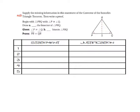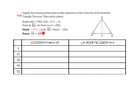The proof of the converse of the Isosceles Triangle Theorem also involves the use of an auxiliary line. We're going to start with triangle PRQ, with angle P being congruent to angle Q. We then want to draw segment RS, which is the bisector of angle PRQ. We're trying to prove that side PR is congruent to side QR. Let's start with the given that angle P is congruent to angle Q and that segment RS bisects angle PRQ.